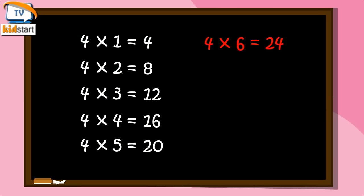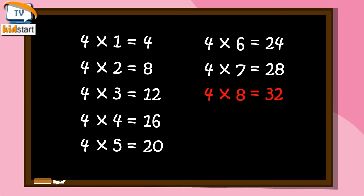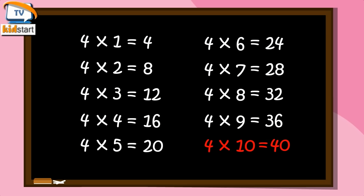Four sixes are twenty-four. Four sevens are twenty-eight. Four eights are thirty-two. Four nines are thirty-six. Four tens are forty.